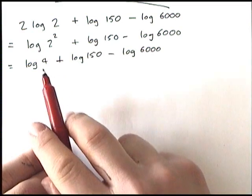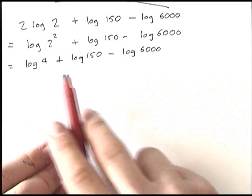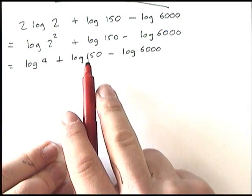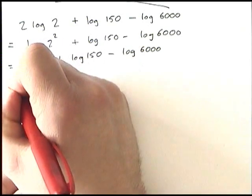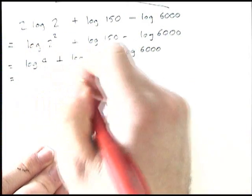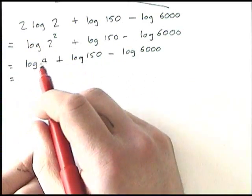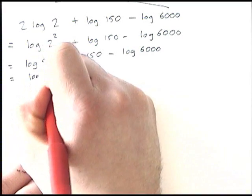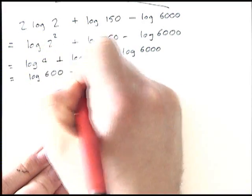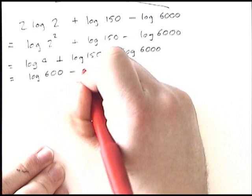I'm going to do my addition and subtraction here. I'm just going to do it straight left to right to avoid any nasty fractions like 150 divided by 6000. So log 4 plus log 150 can simplify to log 4 times 150. 4 times 150 is 600. Still got to take away log 6000.